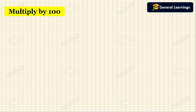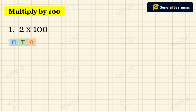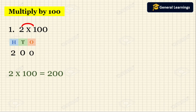Now we are going to see multiplication by 100. Let us take one example. They have given 2 into 100. When we multiply a number by 100 we write two zeros to the right of the number. Since 100 is a three-digit number, the place value will be ones, tens, hundreds. The two zeros should be written in the ones and tens place. Then multiply the remaining number by 1: 2 into 1 is 2, written in the hundreds place. So 2 into 100 equal to 200.